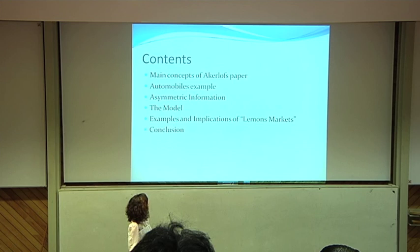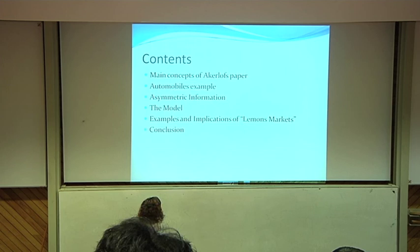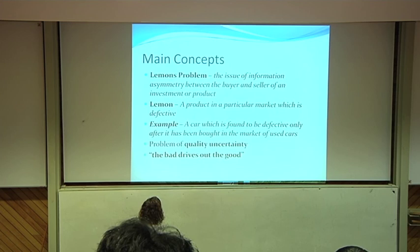First I'm going to explain the main concepts of Akerlof's paper, then I'll go on to explain an automobiles example that he uses to explain the lemons market, and then I'll explain asymmetric information in the market. Then I'll go on to explain the model and some examples and implications of the lemons market, and then I'll conclude the presentation.